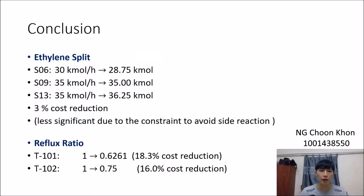In conclusion, in ethylene split optimization, the cost reduction isn't very significant due to the constraint we set to avoid side reaction. For the reflux ratio optimization, we get more significant results while maintaining the purity that we want. That's all for me. Thank you.